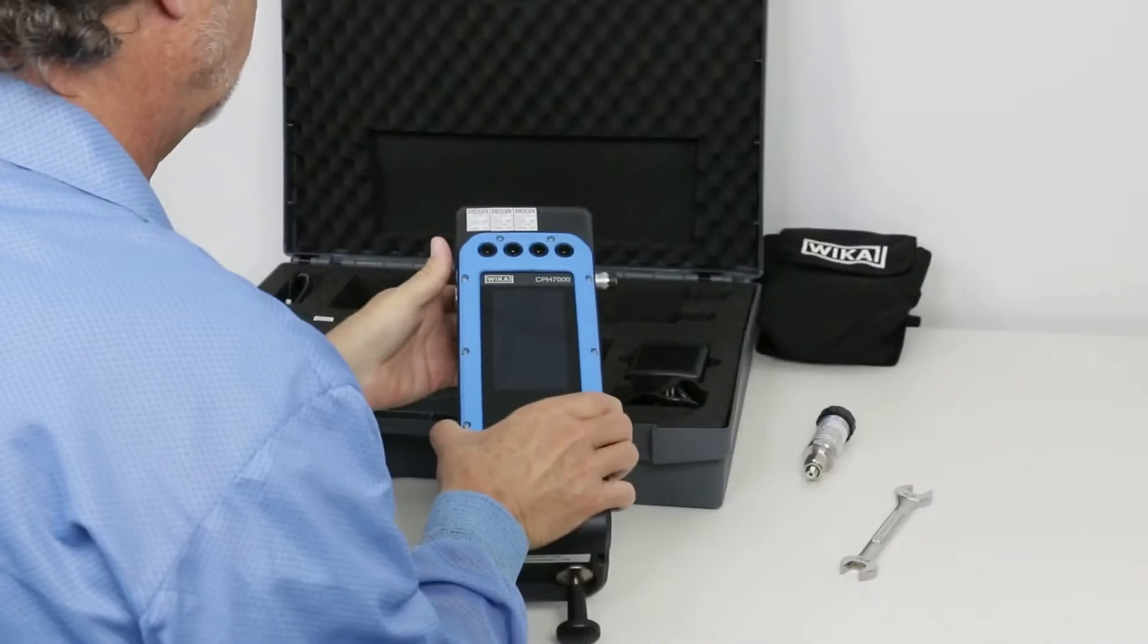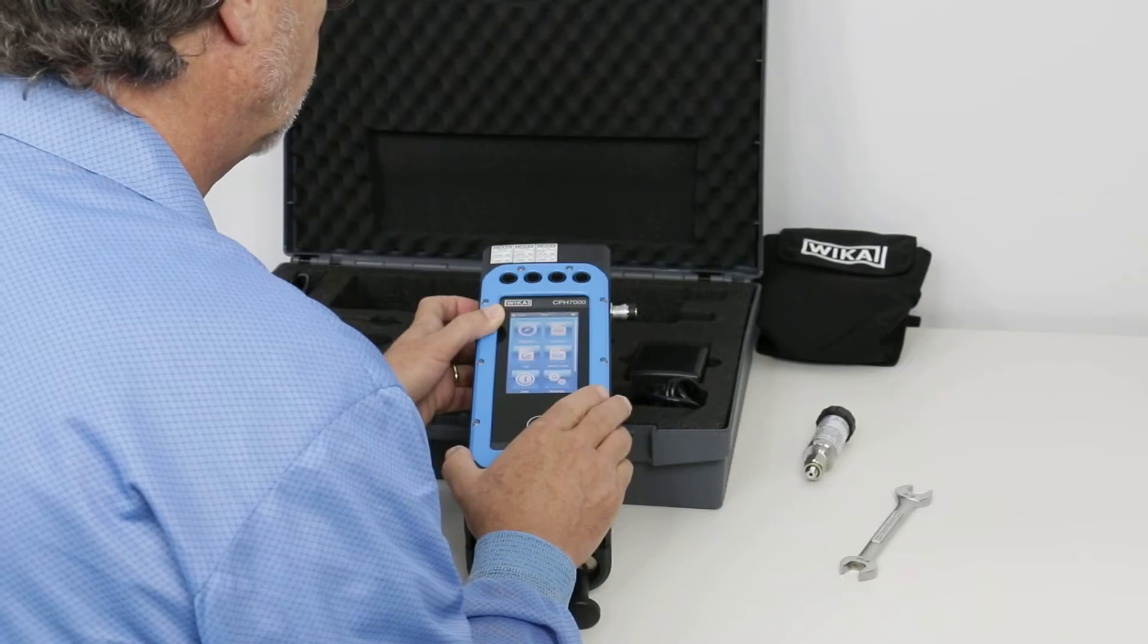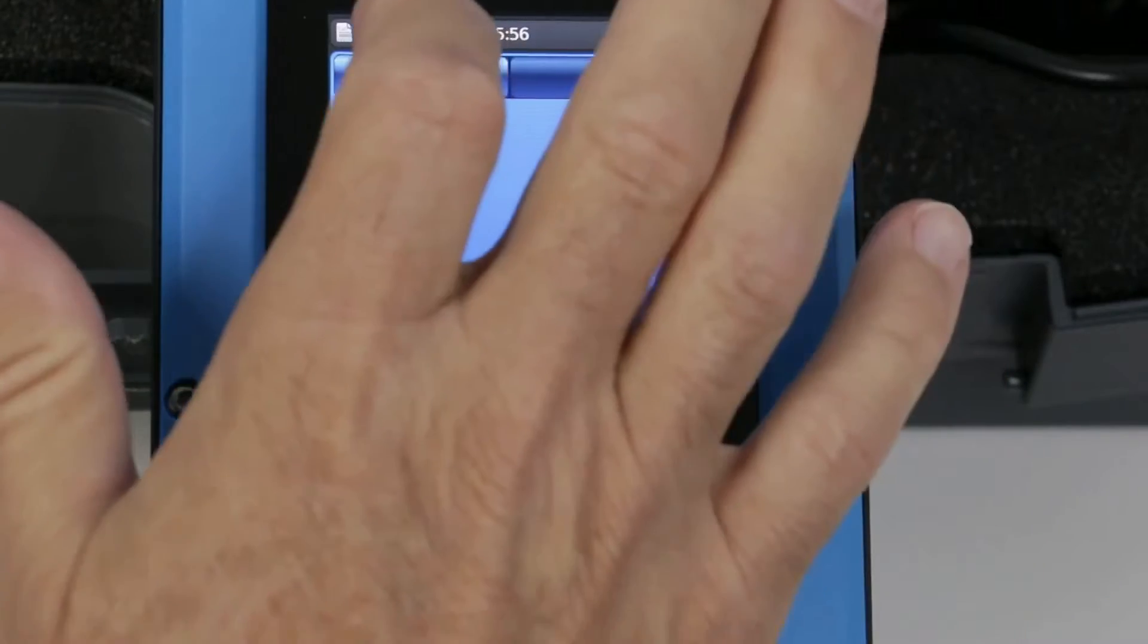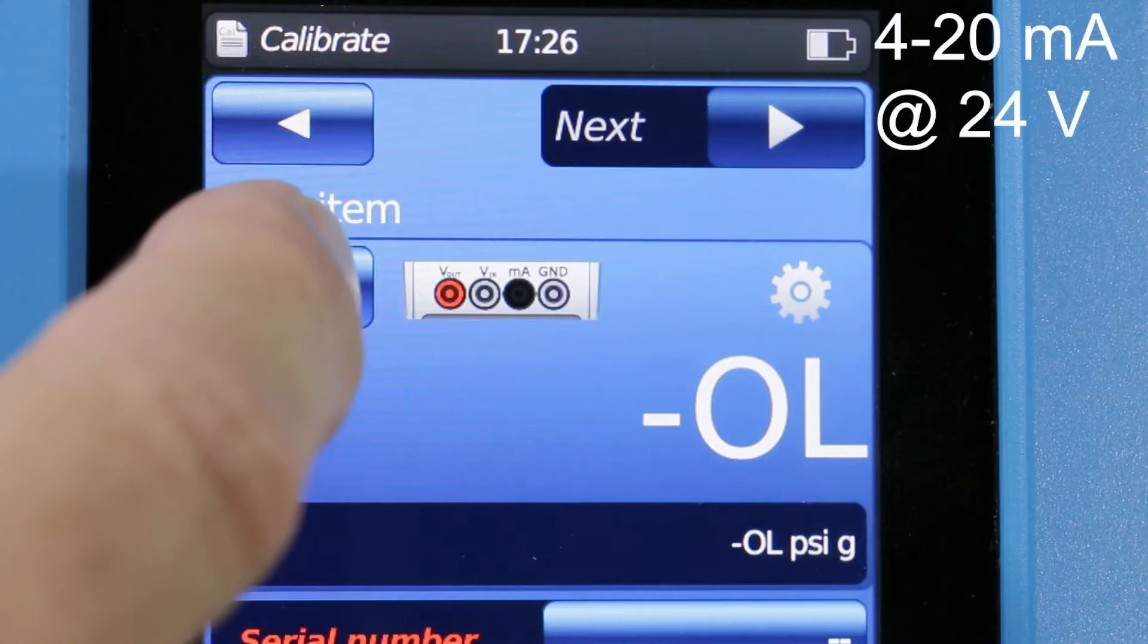To save time in the field, the calibration routine can be pre-programmed. In this example, the output signal is 4 to 20mA with 24V power.